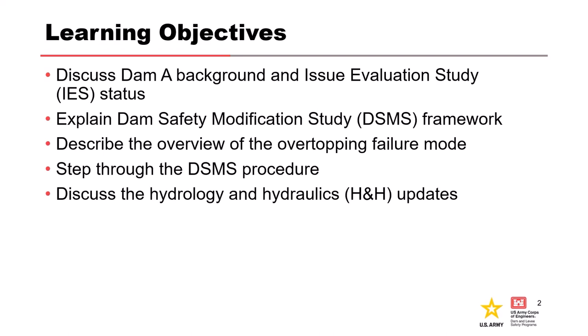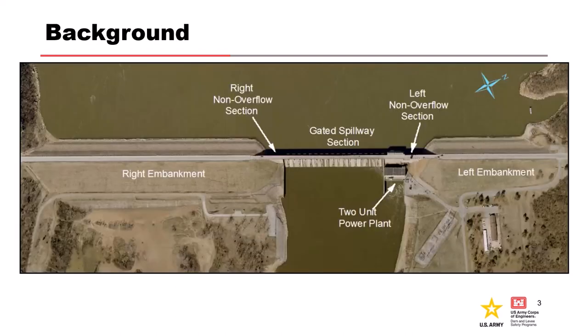We'll talk briefly about the process that goes into the DSMS framework and see how our H&H part fits into that. This one is going to be driven by overtopping, which is one of our key drivers. Dam A is a USACE dam authorized for flood control, water supply, hydropower, navigation, and fish and wildlife. It's located approximately 50 miles upstream of a bigger population center, so it has high consequences. The dam has rolled embankments on the left and right, left and right concrete gravity spillway non-overflow sections, and a gravity concrete spillway section with two hydropower units.